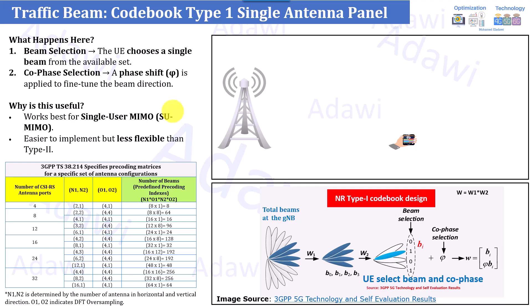The first type I would like to start with is Code Book Type 1, which is used during the traffic beam allocation for the PDSCH — the physical downlink shared channel. We will look at what kind of beam can be allocated for the PDSCH to the user based on Code Book Type 1.